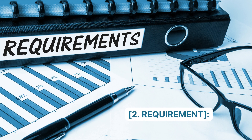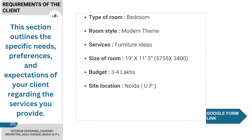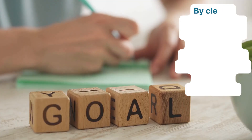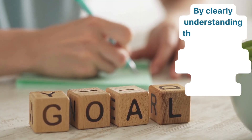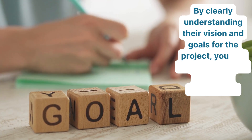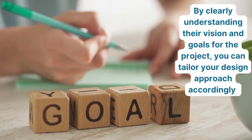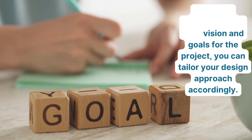Number 2: Requirement. This section outlines the specific needs, preferences, and expectations of your client regarding the services you provide. By clearly understanding their vision and goals for the project, you can tailor your design approach accordingly.